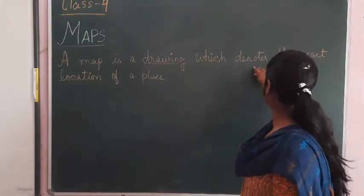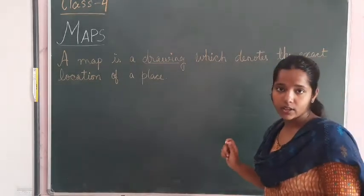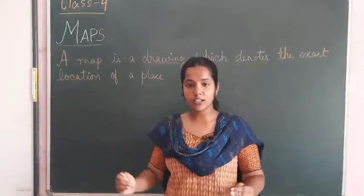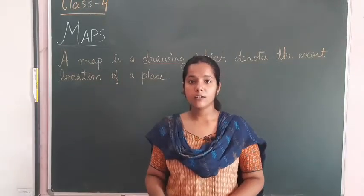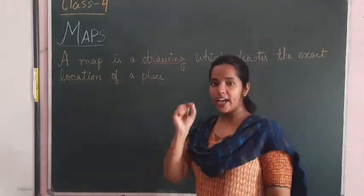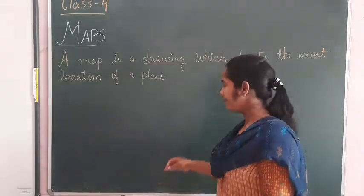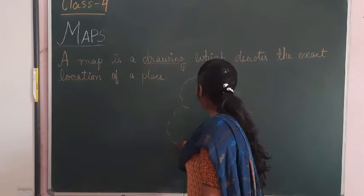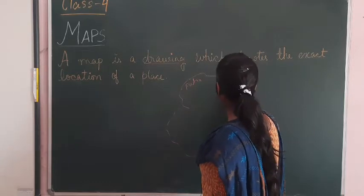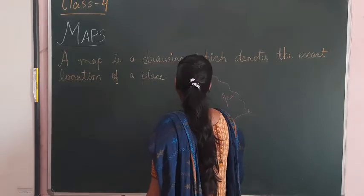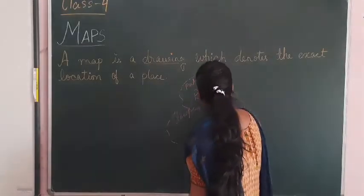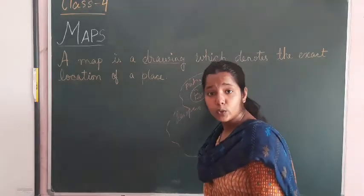A map tells us about the exact, meaning the correct, location of a place. For example, if Buxer is a location and we want to come here, we will see the map of Bihar and locate Buxer on it. For instance, if this is a map with places like Patna and Danapur marked, Buxer will be located in between - that is the location where we want to reach.